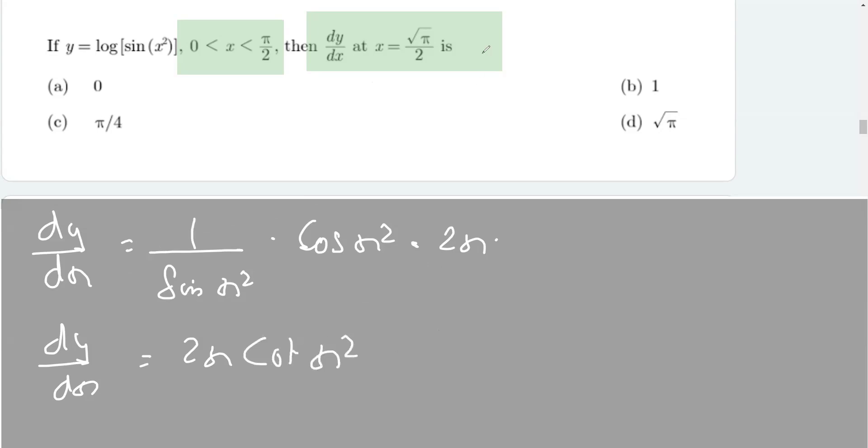Now in the later part, what we have to do is find dy/dx at x equals square root of pi by 2.